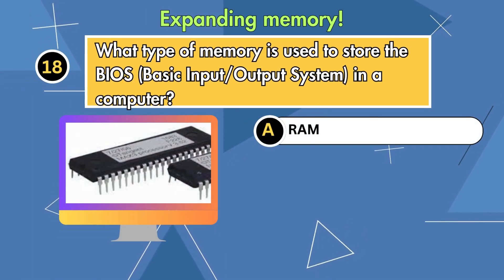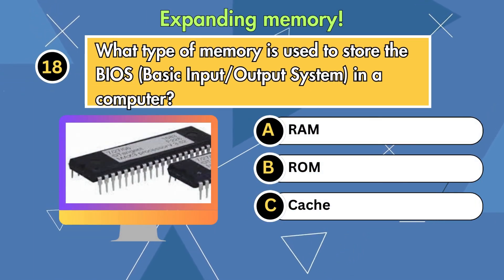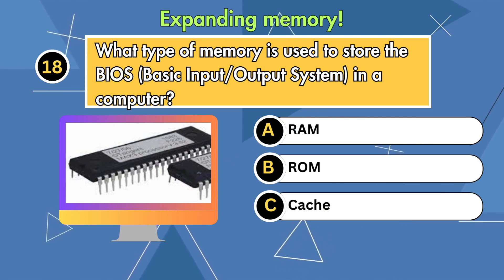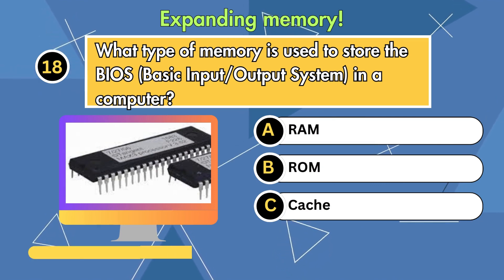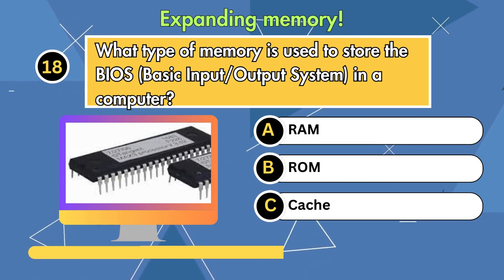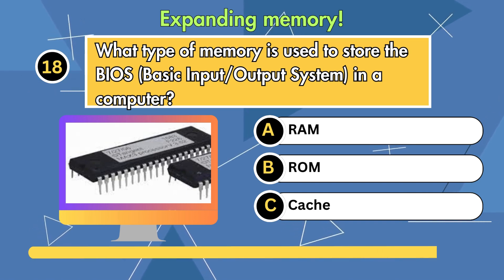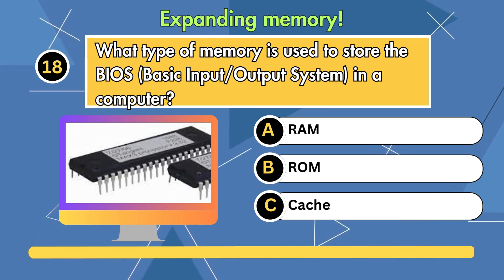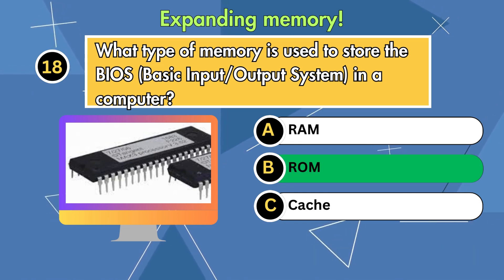Question 18. What type of memory is used to store the BIOS (basic input/output system) in a computer? Option 1: RAM. Option 2: ROM. Option 3: Cache. Answer is ROM.